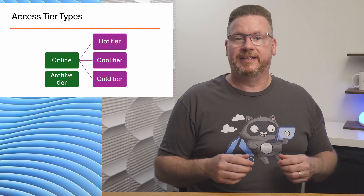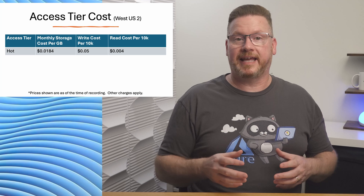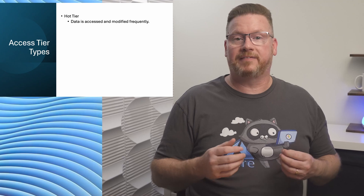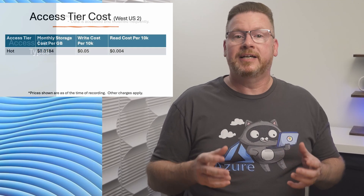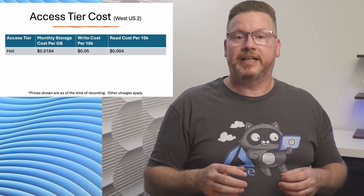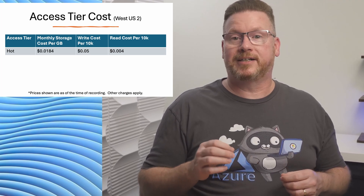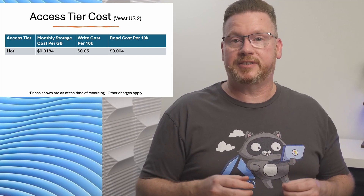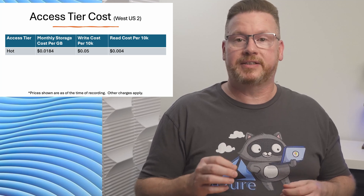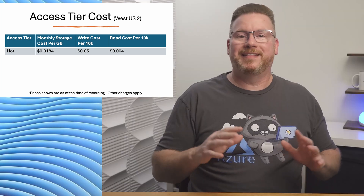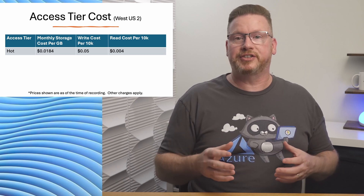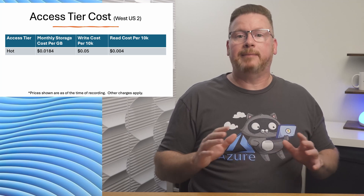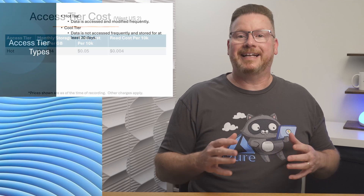On the screen is the cost of storing and accessing data from the Microsoft Storage Pricing page. Let's start with the hot tier. This is for data that's accessed and modified frequently and has the highest storage cost but the lowest access cost. It shows the cost for storage in West US 2: $0.0184 per gigabyte to store the data, and write operations cost $0.05 per 10,000 writes. The cost to read is $0.004 per 10,000. This isn't a complete list — the price changes after 450 terabytes, and there are other costs for transactions like listing objects in a container.